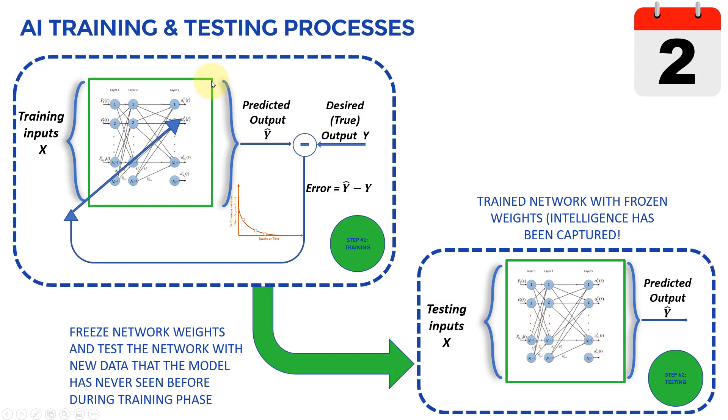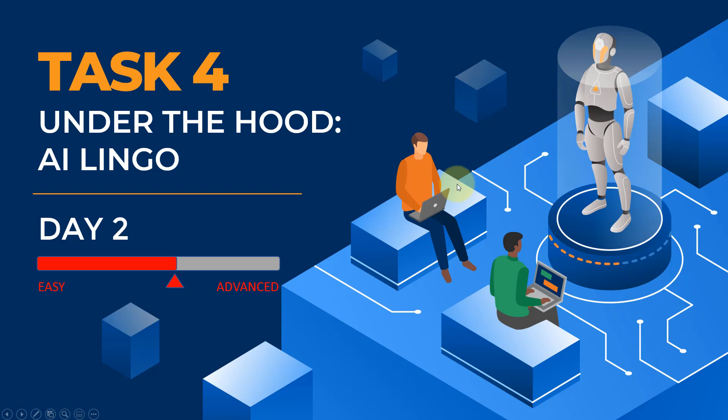That's the difference between the training process and the testing process. That's all for task number three. In task number four, we'll shift back to Google Teachable Machines and understand the AI terminology behind it — learning rate, epochs, and so on. I hope you enjoyed this lecture and see you in the next one.